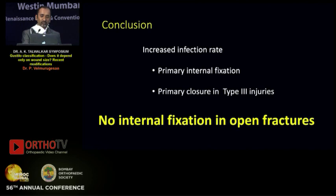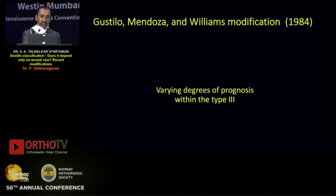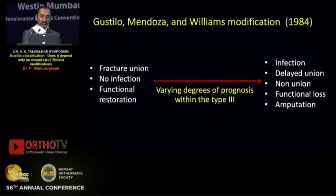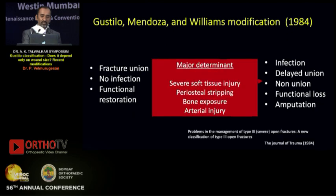They concluded that there was an increased infection rate with primary internal fixation and primary closure in type 3 wounds, and they advocated no internal fixation in open fractures. In 1984, Gustilo and Mendoza modified their classification as they felt there was a varying degree of prognosis within the type 3 group, and the major determinants were severe soft tissue injury, periosteal stripping, and arterial injury.